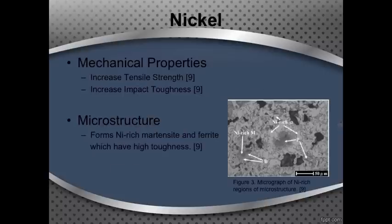In the case of nickel, the mechanical properties it affects are tensile strength and impact toughness, both of which tend to increase with additions of nickel. Microstructurally, nickel tends to help form a nickel-rich martensite and nickel-rich ferrite region, which have a really high toughness. The micrograph shown in figure 3 is of a powdered metal with nickel added, and the arrows point out nickel-rich martensite areas as well as nickel-rich ferrite areas, both of which help to increase toughness.